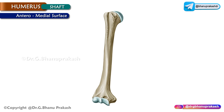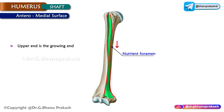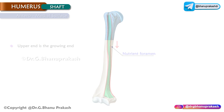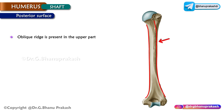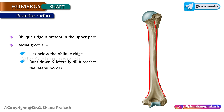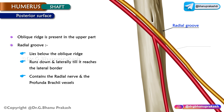The anteromedial surface lies between the anterior and medial borders. An oblique ridge is present in its upper part. The radial groove lies below the oblique ridge and runs down and laterally until it reaches the lateral border; it contains the radial nerve and the profunda brachii vessels.